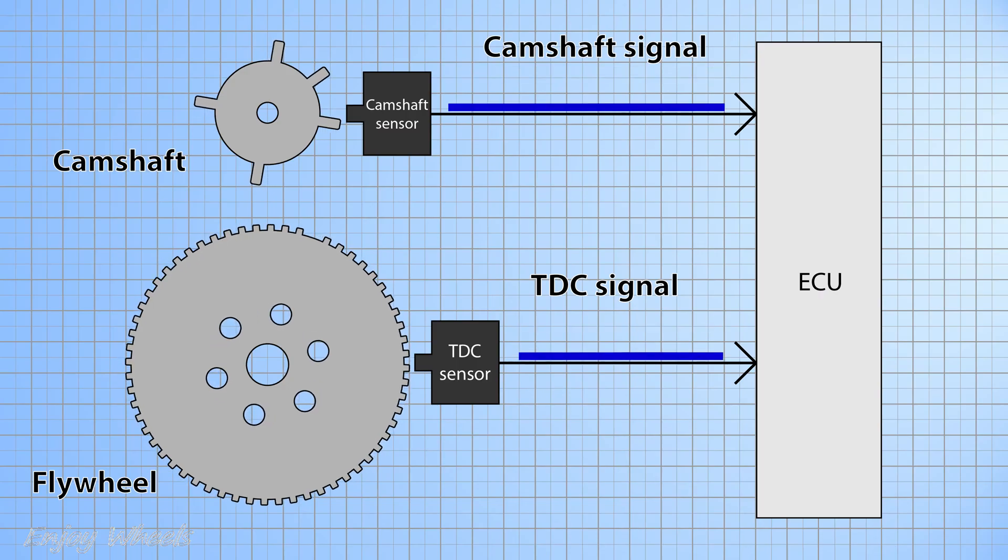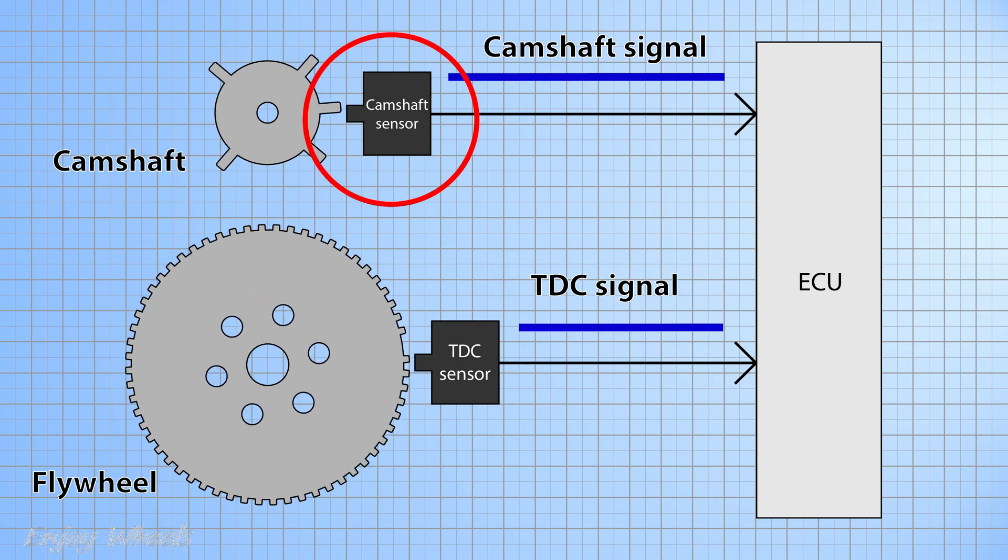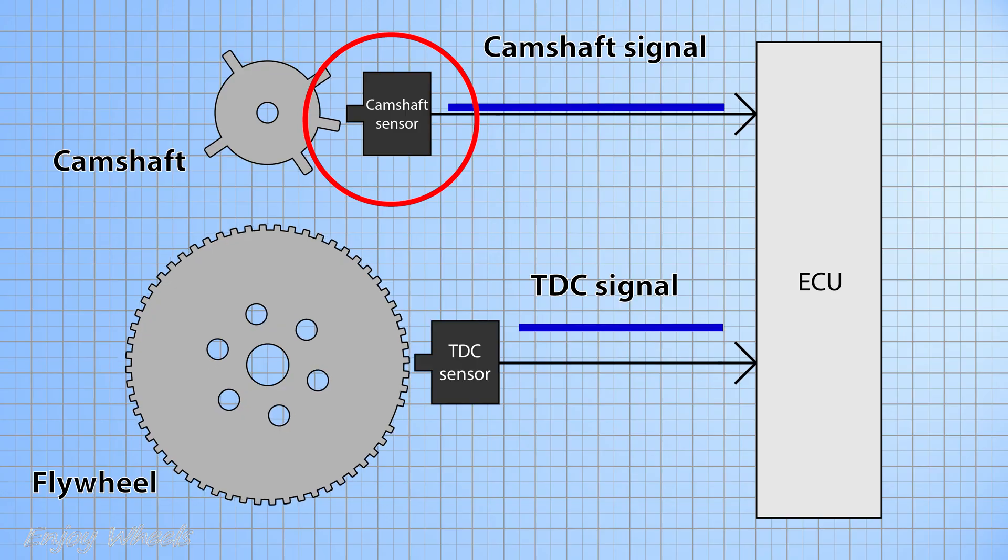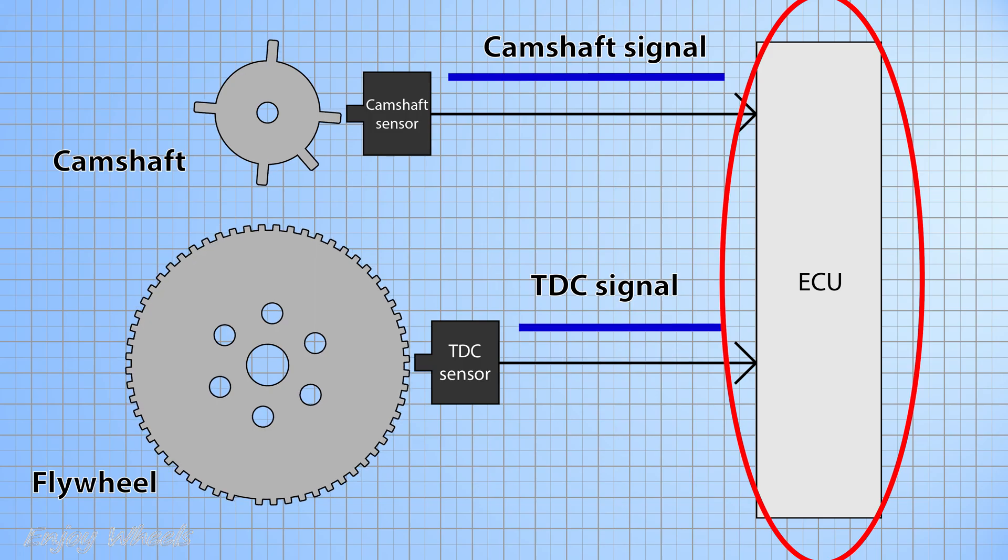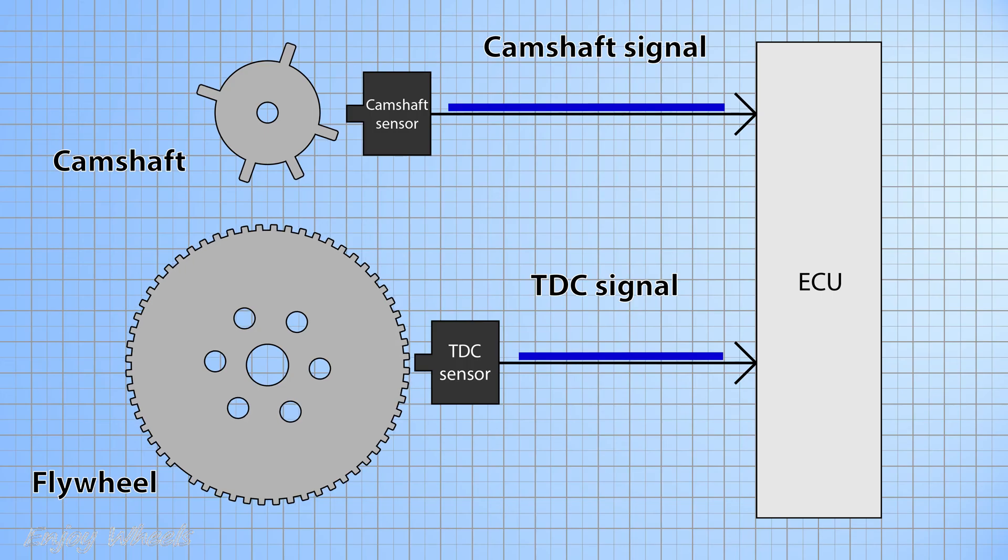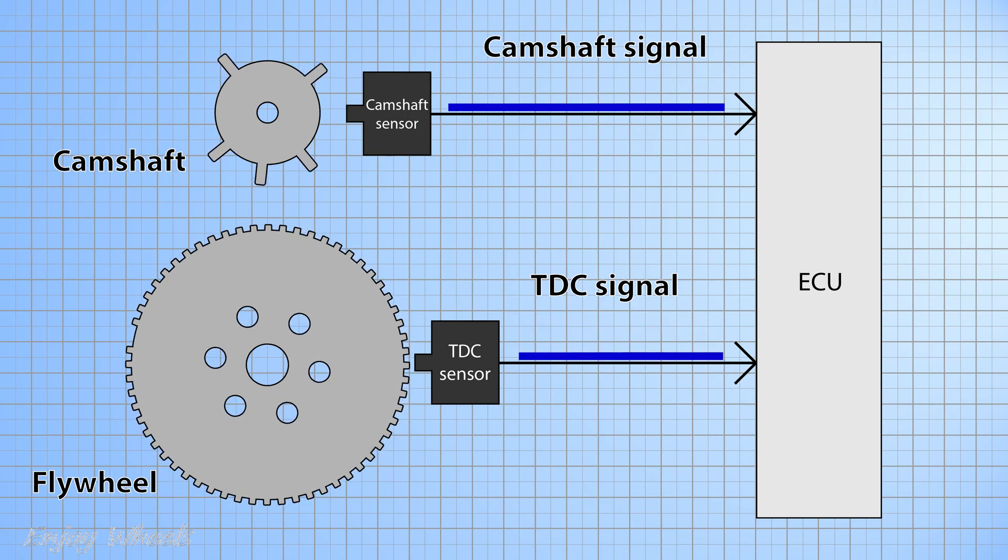I remind, whether it is a TDC sensor often located on the flywheel or whether it is a camshaft sensor located at the end of the camshaft, the principle remains the same. The aim is that the engine computer, also called ECU for engine control unit, knows exactly the position of the two shafts and therefore their speed of rotation as well.